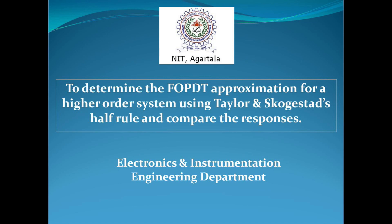Hello everyone, this is our process control lab. In today's session we will see how to determine the FOPDT approximation for a higher order system. FOPDT means First Order Plus Dead Time. We will make an approximate Simulink model or process model equivalent to a higher order system using two methods: Taylor's method and Skogestad's half rule, and then compare the responses of these two systems along with the original higher order system.